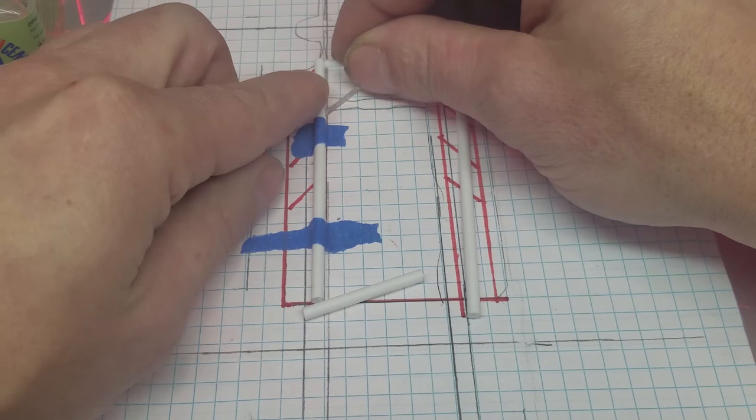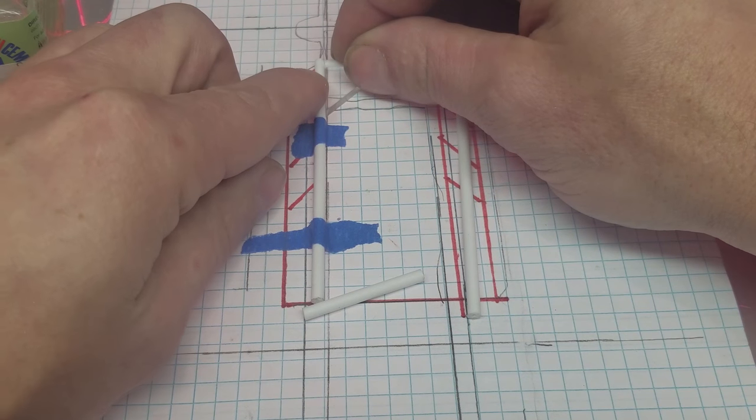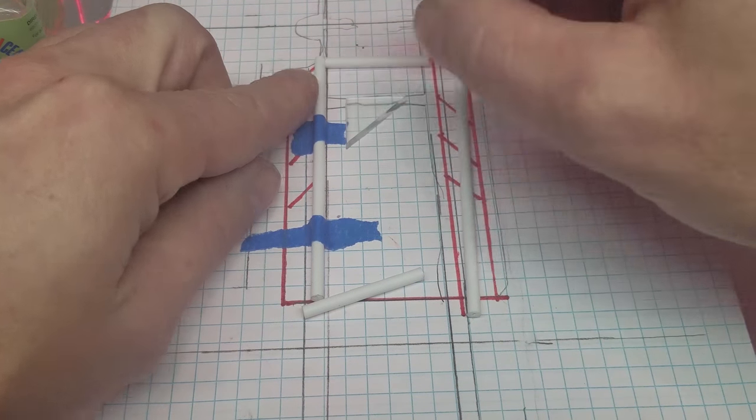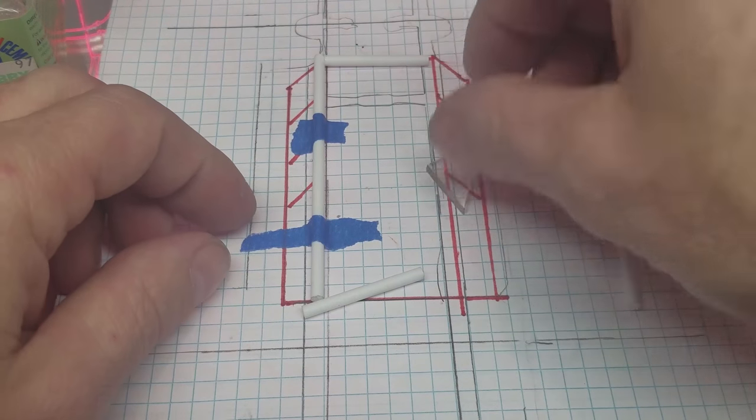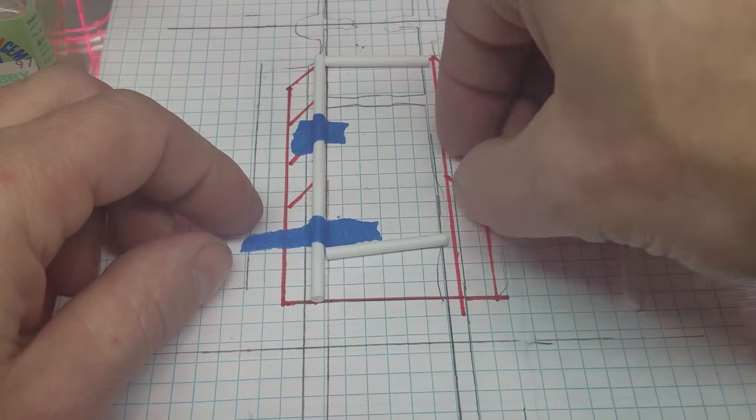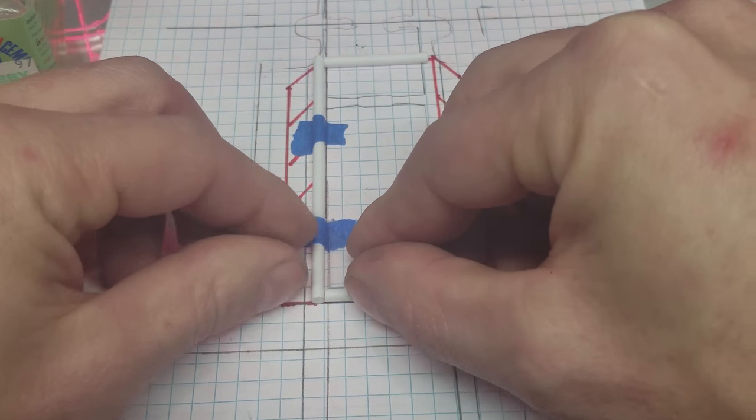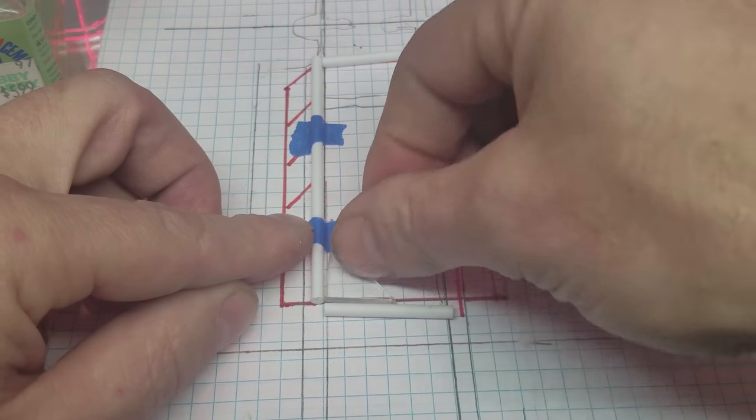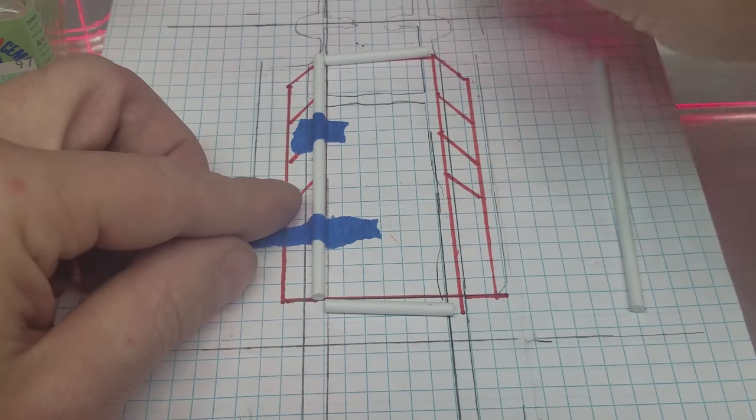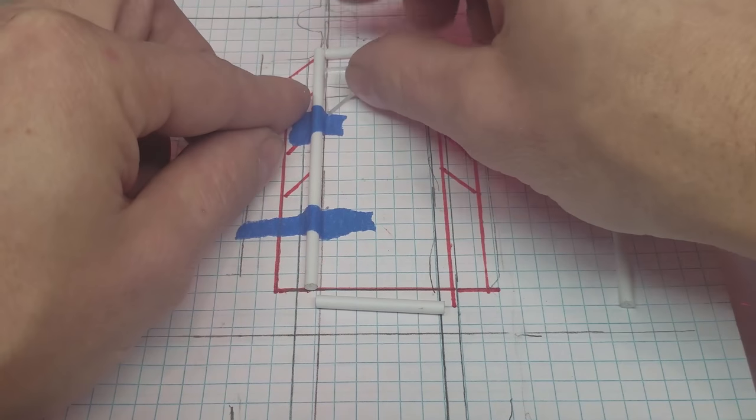You do have a little bit of work time with this Testors Extra Thin, so you can kind of keep working it and getting it so it is nice and square. That's going to be the big part because you don't want your frame to be a little bit off.